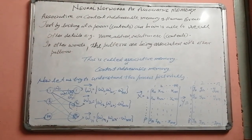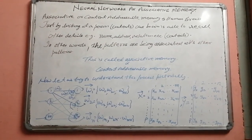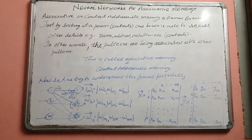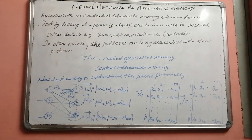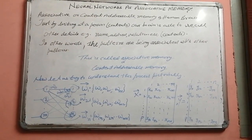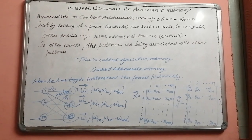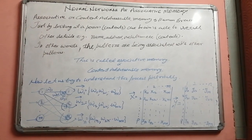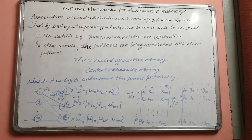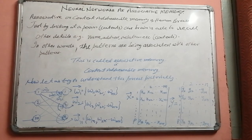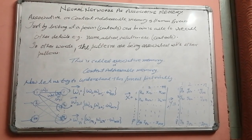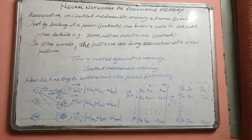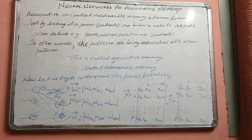Hello all. Our today's topic is Neural Networks as associative memory. Before starting, let us narrate how human beings are able to store faces and things corresponding to their characteristics or different features. We all make use of association-based learning and storage, which is also called content-addressable memories.